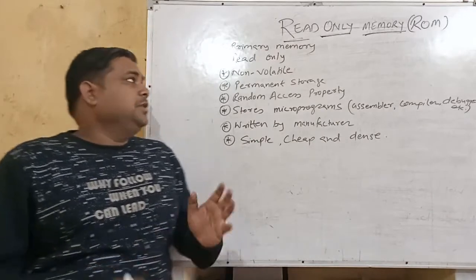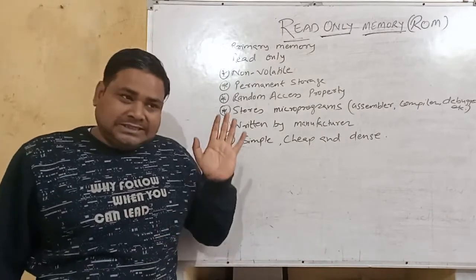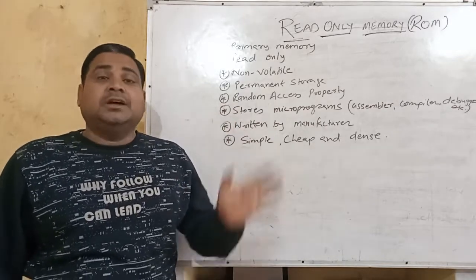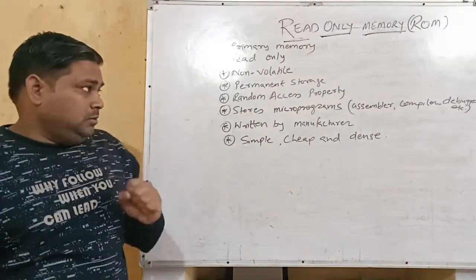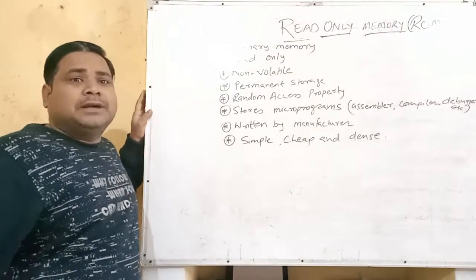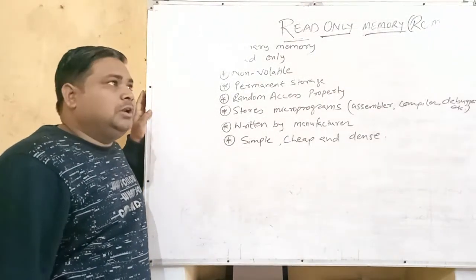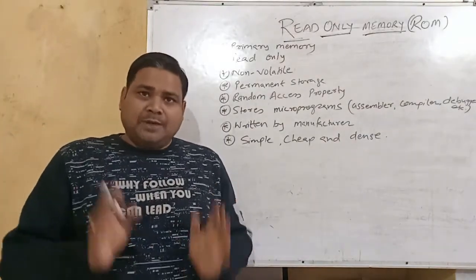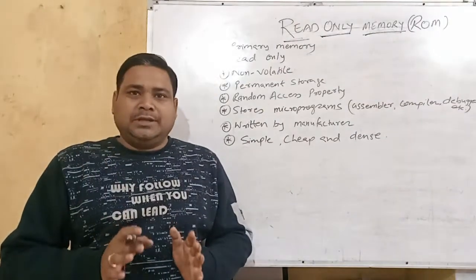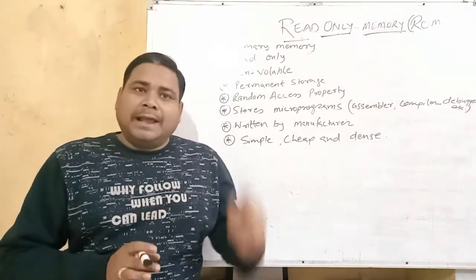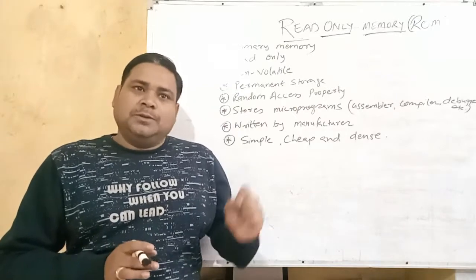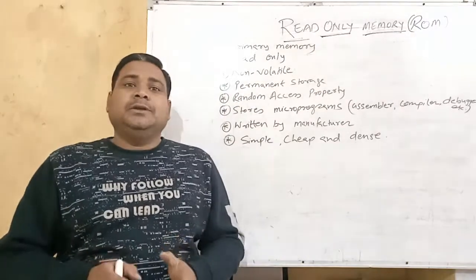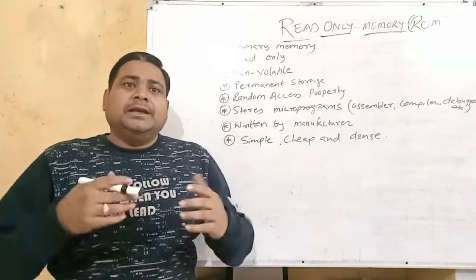Good morning students. Today we are going to learn about the second type of primary memory, which is known as Read-Only Memory — the ROM. The first primary memory is RAM, which is Random Access Memory covered in the previous video, and the second one is ROM, which is Read-Only Memory.